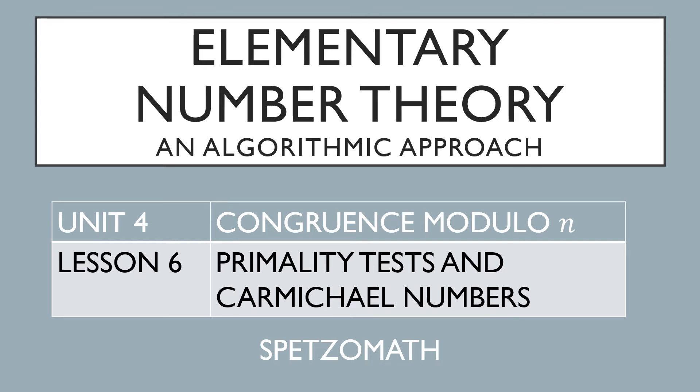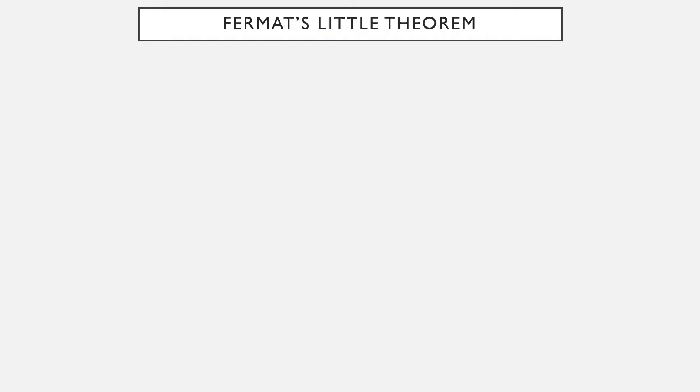One interesting application of Euler's theorem from the previous lecture regards primality tests and something called Carmichael numbers. So first let's look at Fermat's Little Theorem.